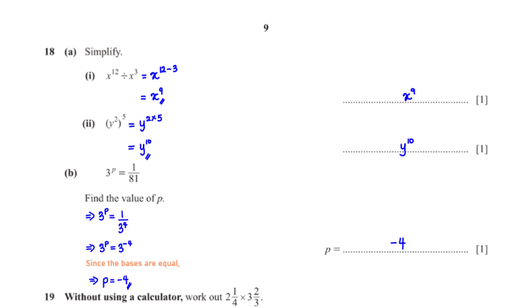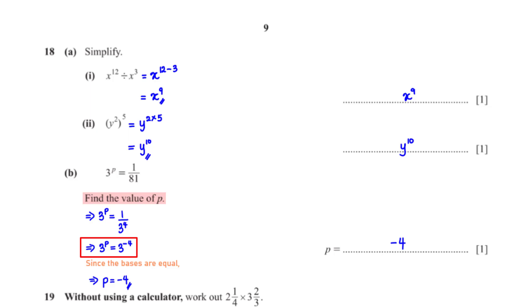3 raised to the power p equals 1 over 81. Find the value of p. We rewrite 81 as 3 to the power 4, so 1 over 3 to the power 4 equals 3 to the power negative 4. Since the bases on both sides are equal, their powers must be equal, so p equals negative 4.